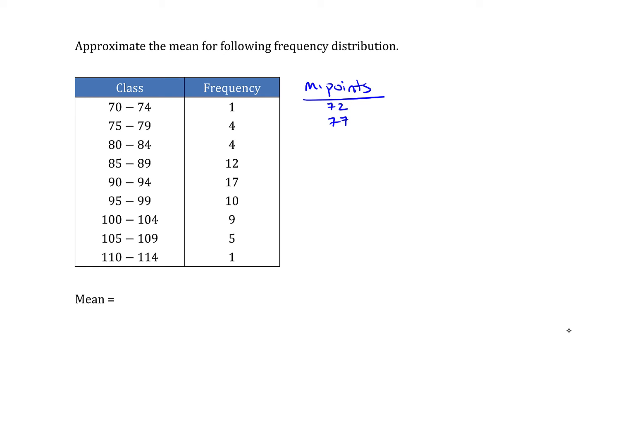And if you find that class width, you can just repeatedly add your class width to each successive midpoint and come up with the remaining midpoints. So either way you get your midpoints is fine, but that's a little bit faster.